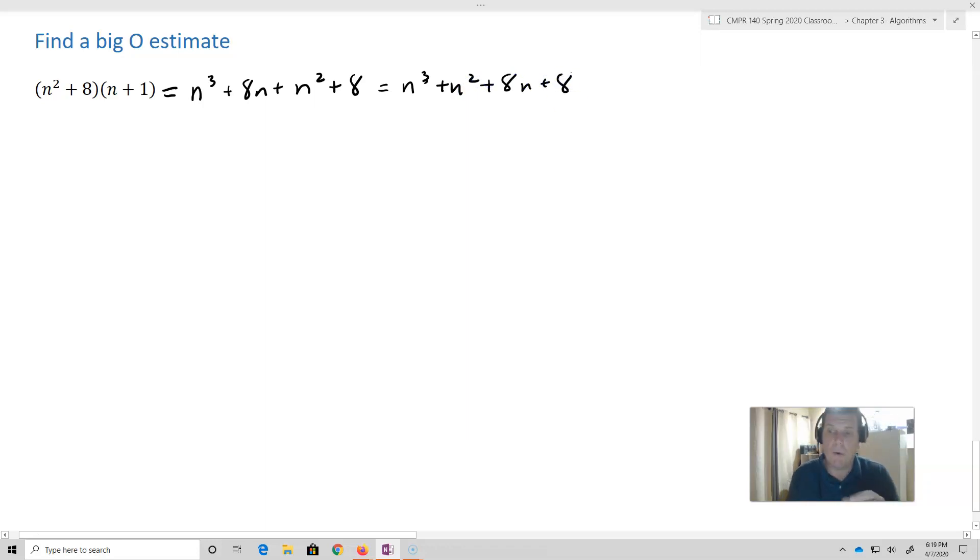Now we already know that the highest degree of the polynomial, n³, is going to dictate what the O number is, the smallest possible O number is. So we know this is O of, in this case, n³ or x³.